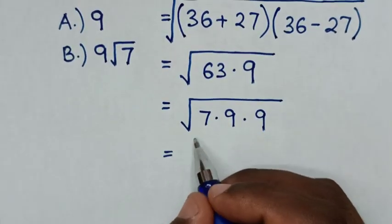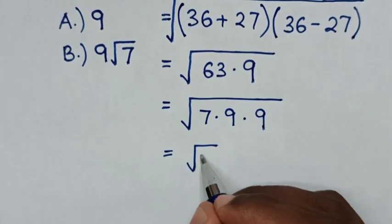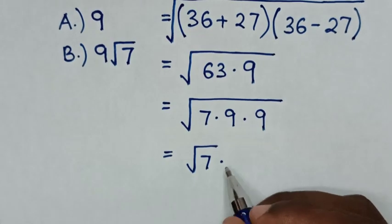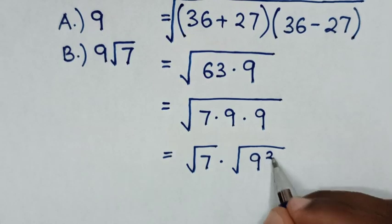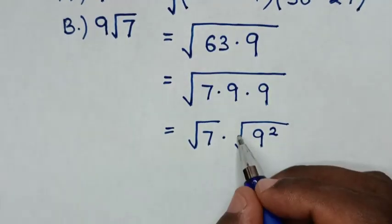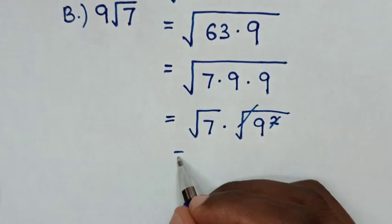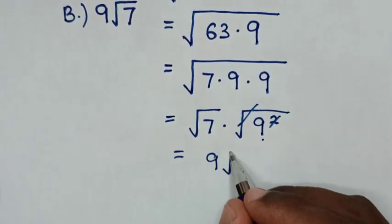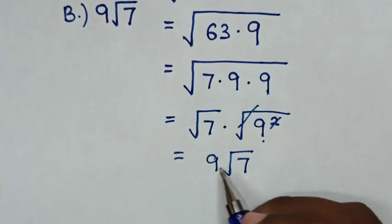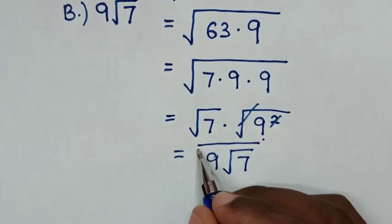Then, it will be equal to square root of 7, then times square root of 9 times 9 is 9 square. So, this square root will cancel with this square. Then, it will be equal to this 9, then square root of 7. So, this is our final answer.